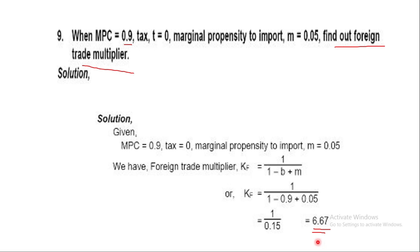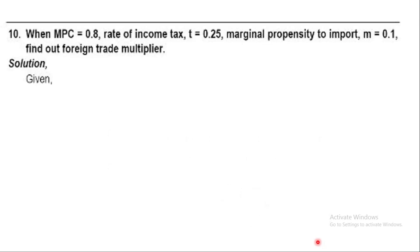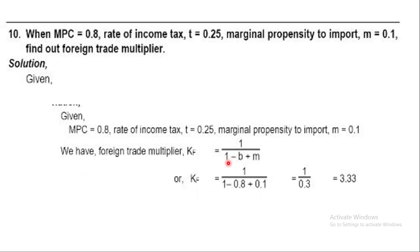Question 10: MPC = 0.8, rate of income tax t = 0.5, marginal propensity to import M = 0.1. Find the foreign trade multiplier. Formula: 1 upon (1 minus B plus M). With MPC = 0.8 and M = 0.1, we get 1 upon 0.3, which equals approximately 3.33.